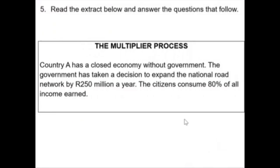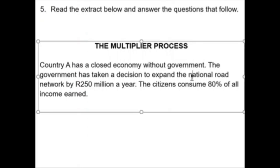They ask us: Country A has a closed economy without a government. Normally we have four role players — businesses, households, government, and the foreign sector — but since it's closed, we don't have a foreign sector, and since there's no government, we immediately know we only have households and businesses.